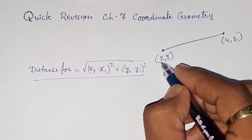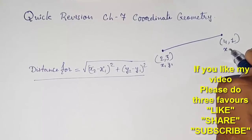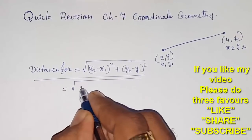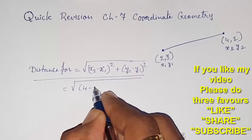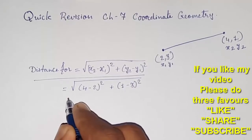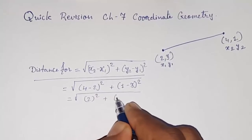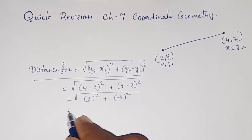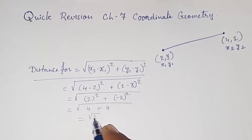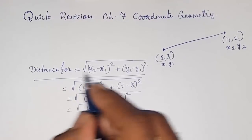You take the first point as x1, y1 and the second point as x2, y2, then put all the values in. For example: (4 minus 2) whole square plus (1 minus 3) whole square gives us 2 squared plus (minus 2) squared, which is 4 plus 4, so under root 8, which equals 2 root 2. This is how you find the distance between any two coordinates.